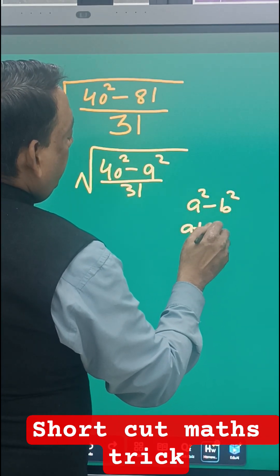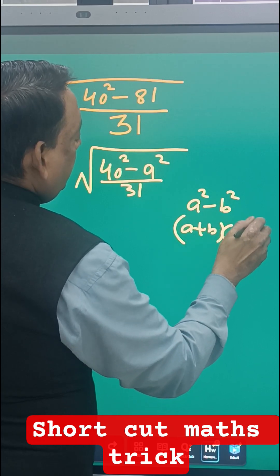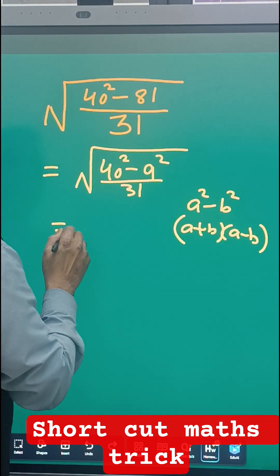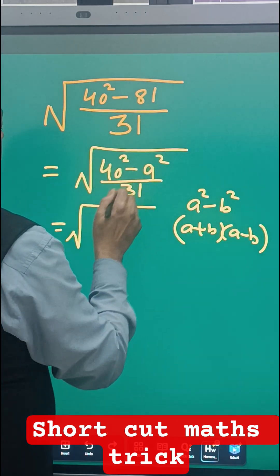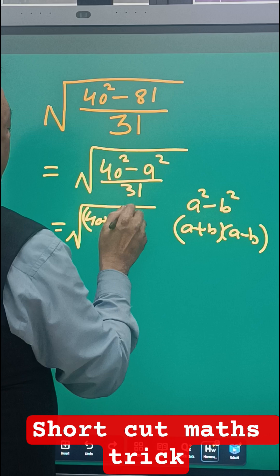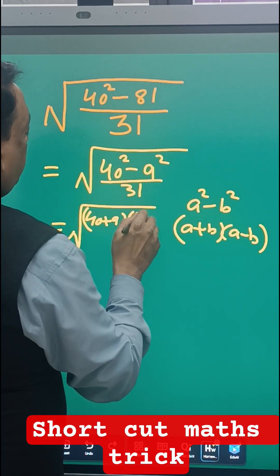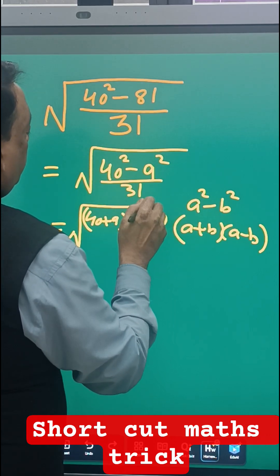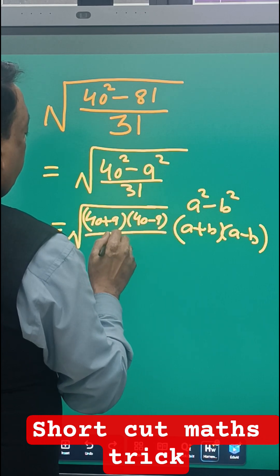So now we have 40 plus 9 (a plus b) and (a minus b) 40 minus 9. If you see properly here, what is 40 plus 9 and 40 minus 9?